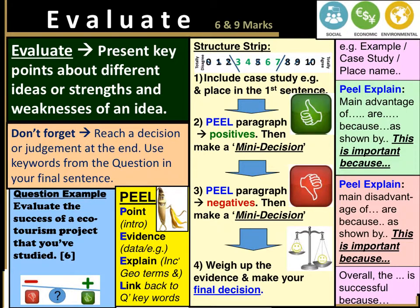In terms of the structure, you're going to look at four different sentences. Your first sentence is going to include your case study, your place name, where you have studied, the data, the geography words, the examples — that's going to be your first sentence to introduce it. Then your second sentence is going to be your PEEL paragraphs: point, evidence, explain, link back to the question — covering the positives, strengths, or advantages of your idea.